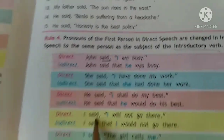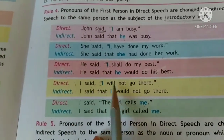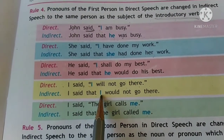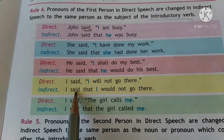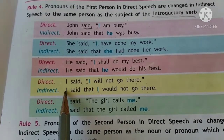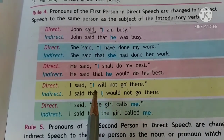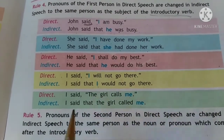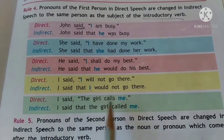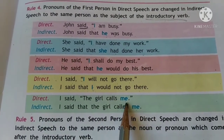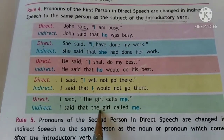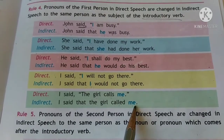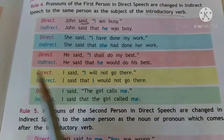Next: I said, 'I will not go there.' In the indirect: I said that I would not go there. Why has 'I' not changed? Because your introductory verb is already in the first person, so it will not change — 'I' will remain 'I' in the indirect, and 'will' becomes 'would'. Next: I said, 'The girl calls me.' In indirect: I said that the girl called me — 'calls' is simple present, which changes into simple past: called.